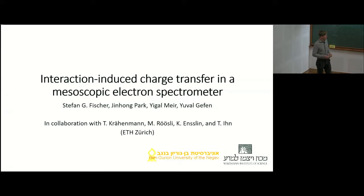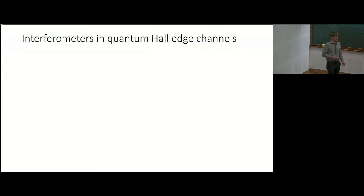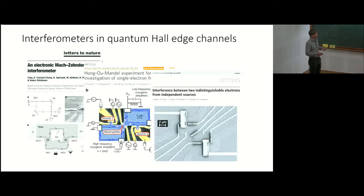First of all, I want to take a step back. Since we have the quantum Hall effect, it has become possible to implement the originally optical interferometers in condensed matter systems. For example, it has become possible to create the Mach-Zehnder, the Hong-Ou-Mandel, or the Hanbury-Brown and Twiss interferometers.